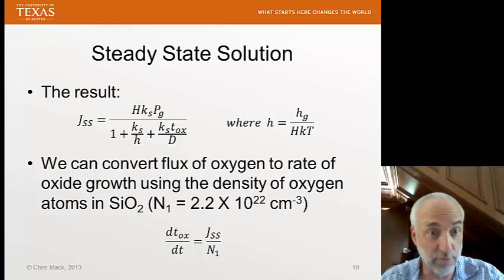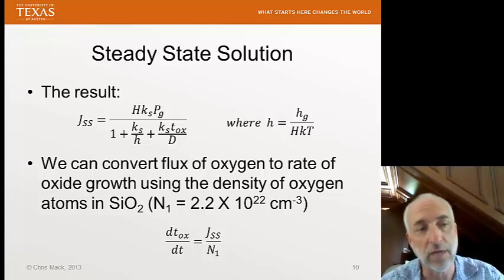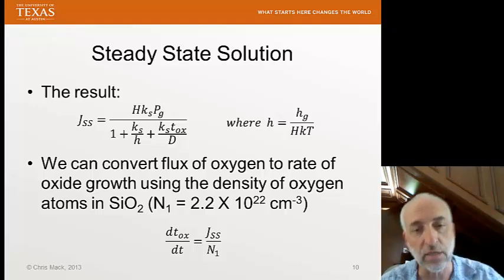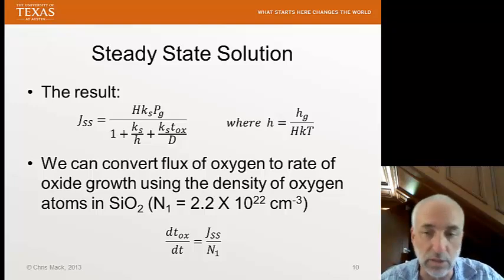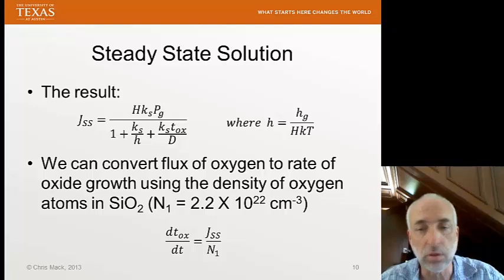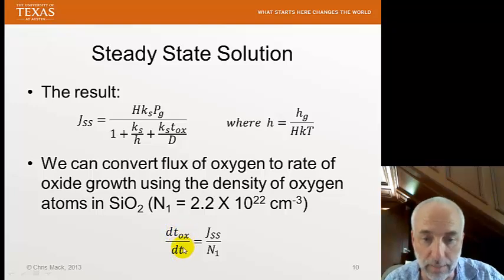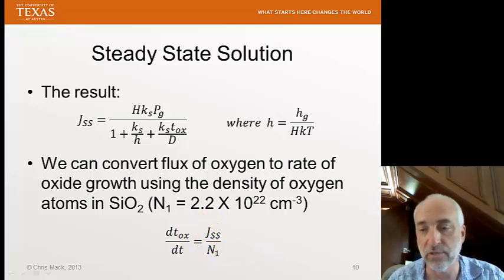Now we have the solution for the flux, but what we really want is the growth rate of the oxide. We convert from flux to growth rate because the flux of oxygen molecules per unit area per unit time can be converted to a thickness knowing the density of oxygen in silicon dioxide — about 2.2 × 10^22 atoms of oxygen per cubic centimeter for thermally grown silicon dioxide. The rate at which oxide thickness T-ox grows with time t is simply J-SS divided by this density N1.